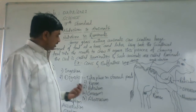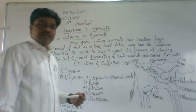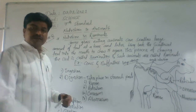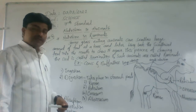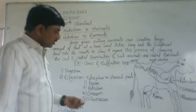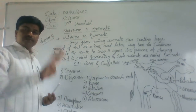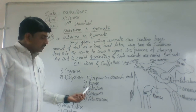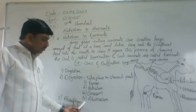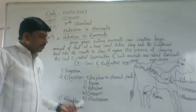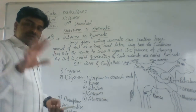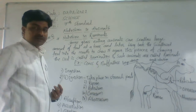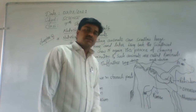The digestion of that grass takes place in the stomach. In ruminants, the stomach has basically four parts: the first is the rumen, the second is the reticulum, the third is the omasum, and the fourth is the abomasum. Digestion in ruminants takes place across these four parts.